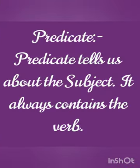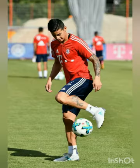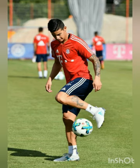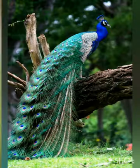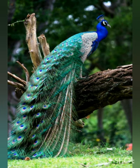Now let us proceed to the predicate part. Predicate tells us something about the subject. The predicate always contains the verb. Let us study the following examples. 'The boys are playing football.' Here 'are playing' is the verb, and 'are playing football' is the predicate. Second: 'The peacock is our national bird.' 'Is' is the verb in this sentence, and 'is our national bird' is the predicate.